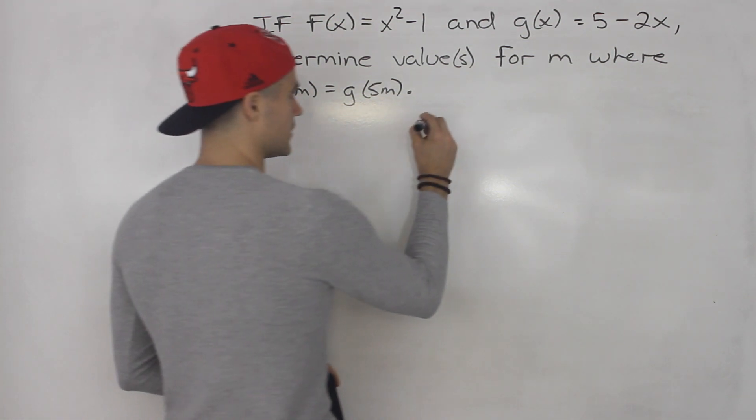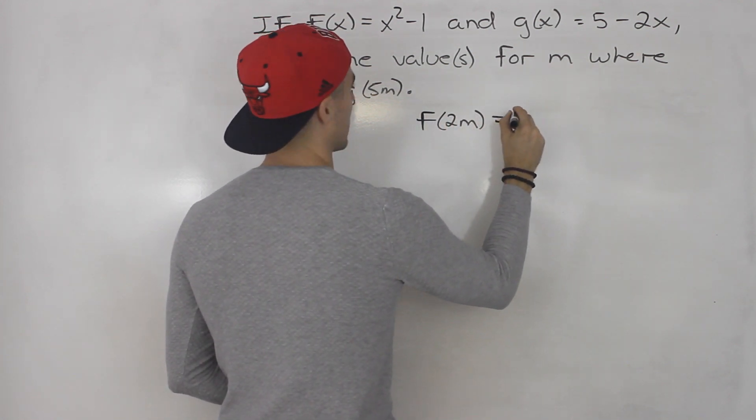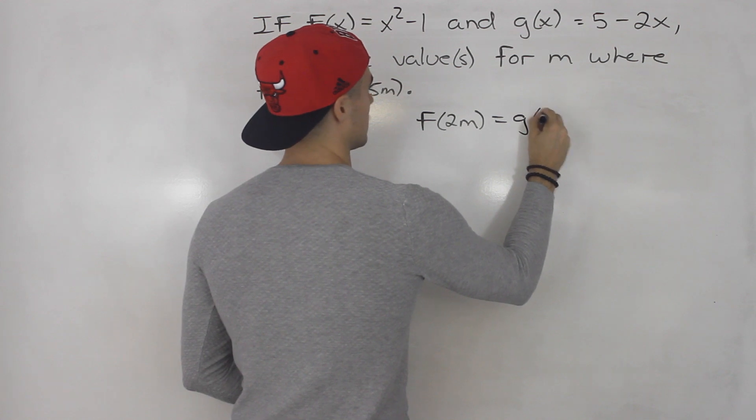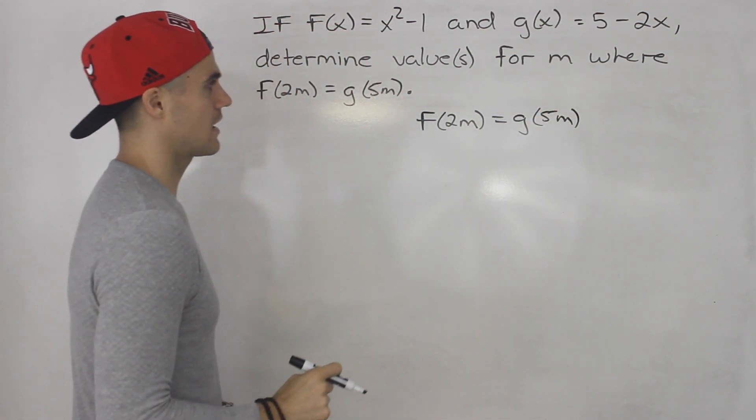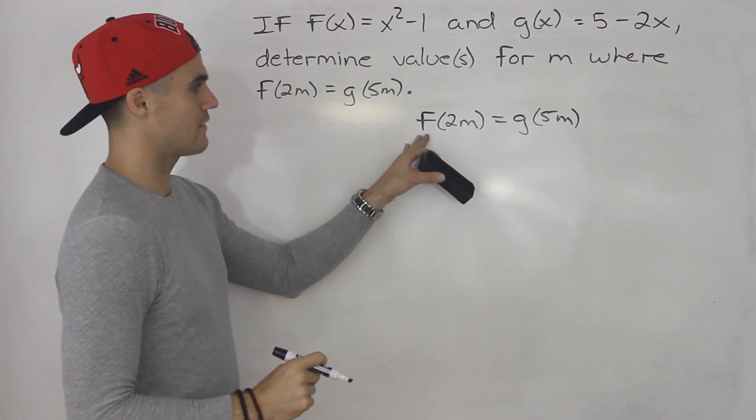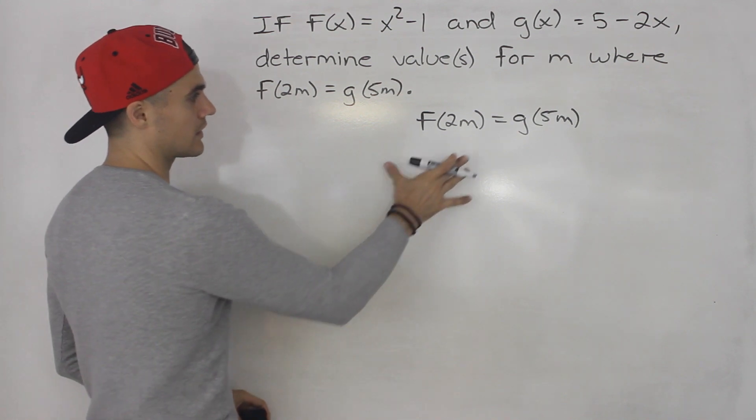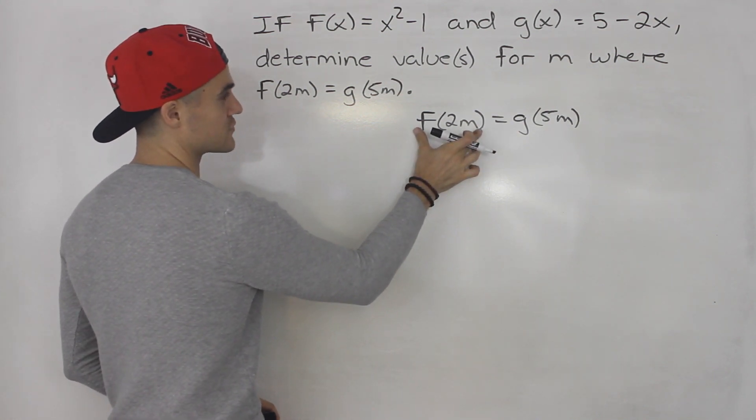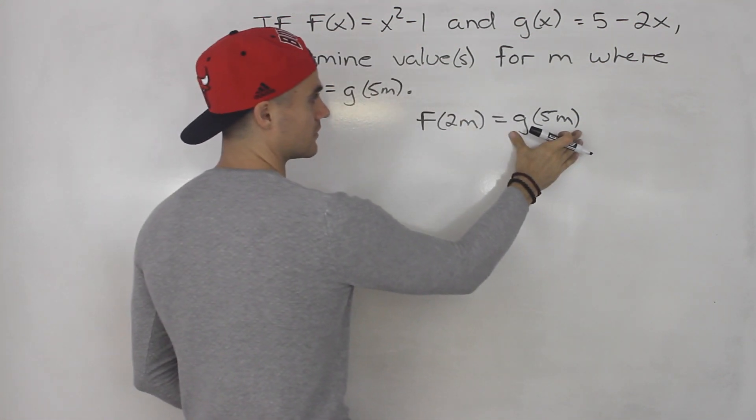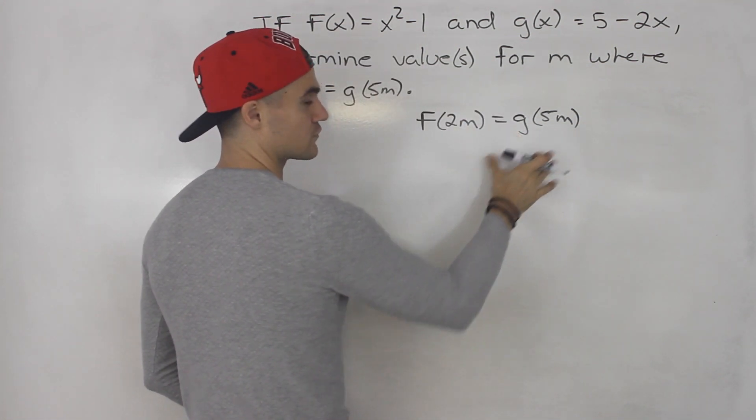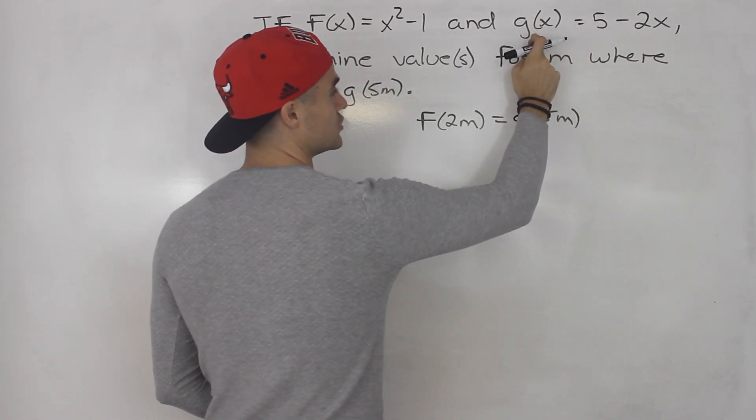This question is a little bit unique, haven't done one like this yet, but it's not too bad. Basically we're solving for m, that constant where f(2m) = g(5m). What you want to do is plug in an expression on the left side f(2m) using the function for f(x), and then plug in an expression for g(5m) using the expression for g(x).